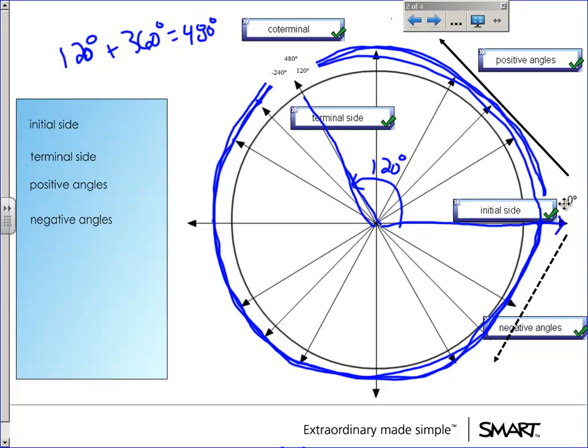Initial side, terminal side. Positive if we're going counterclockwise. Negative if we're going clockwise. And coterminal angles are angles that end up in the same place but have different names.